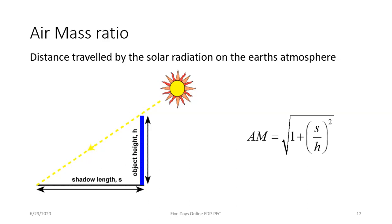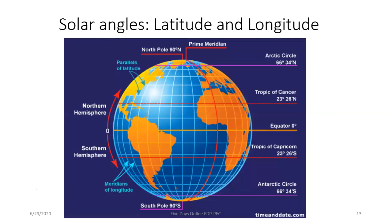An alternate method to calculate air mass ratio without instruments: place an object of known height and measure its shadow length at different times. Latitude is a prime parameter affecting solar radiation on a surface — longitude is less critical. Latitude divides the world into the northern and southern hemispheres at the equator, defined as zero degrees, with north being positive and south being negative.